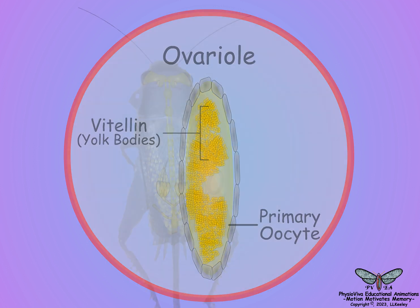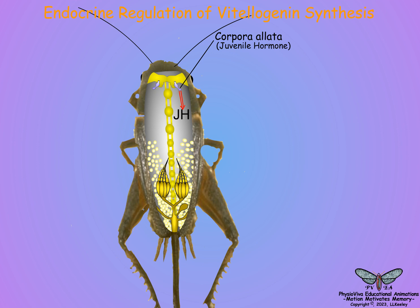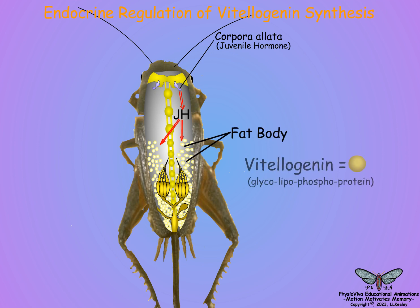Female adults of most insect species employ juvenile hormone from the corporellata to promote oocyte maturation by vitalin deposition. The juvenile hormone stimulates the fat body to synthesize and release vitalogenin, a large glycolipophosphoprotein that is the precursor protein to yolk vitalin.